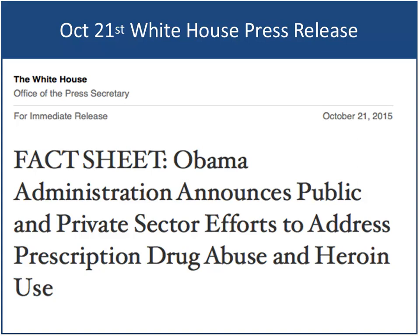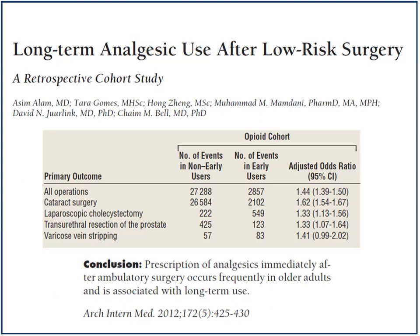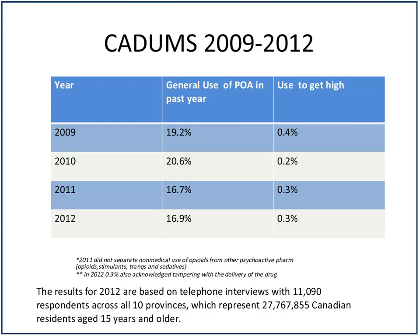Looking at that study — after low-risk surgery, such as a cataract or laparoscopic cholecystectomy, there is a 10% risk of being on a persistent opioid a year after, in opioid-naive individuals. We thought that was a pretty high number. Using the exact same ICES database, we set out to determine whether that 10% made sense. The CADAMS database — telephone interviews across about 20,000 respondents representing the Canadian population — shows that as physicians we've actually started to curtail our prescription opioid use, while the use of opioids to get high has remained about the same. We need solutions to address this.